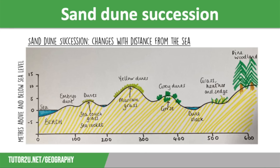Dunes get bigger because the sand is bound together by the roots of vegetation such as marram grass, which has very long, tough roots. Binding the sand together enables the sand dunes to grow high. Marram grass is also quick-growing, which aids this further.